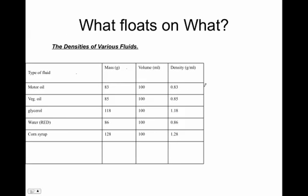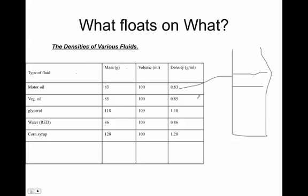Don't forget that density is related to buoyancy. If we put all these substances into a big graduated cylinder, the least dense — motor oil — would be on top, then vegetable oil, then water with red food coloring, then glycerol, and on the bottom would be corn syrup.